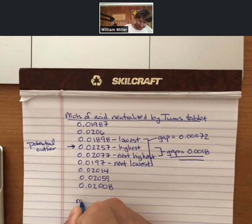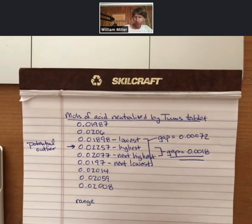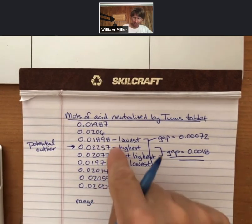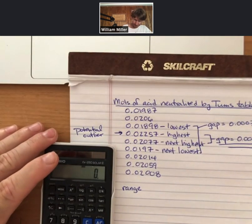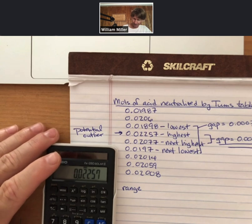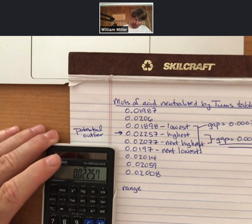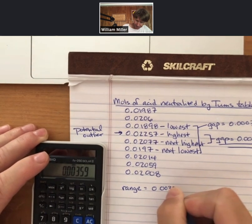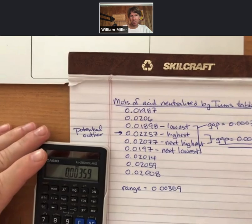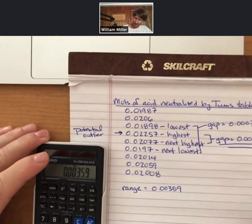Now I need my range. Range is always highest minus lowest. So I'm going to take my highest minus my lowest point, 0.02257 minus 0.01898, and I get 0.00359.